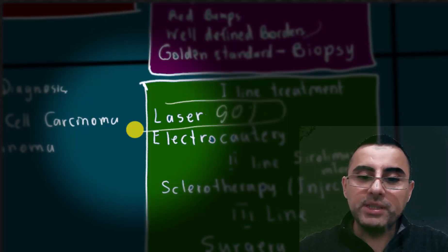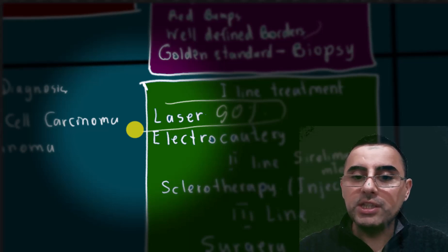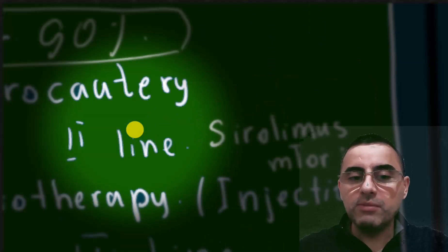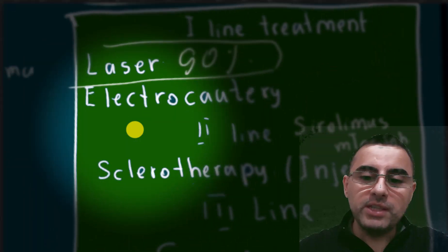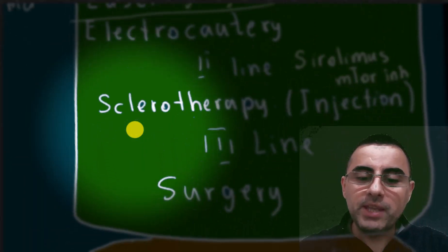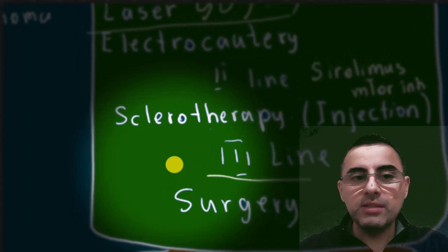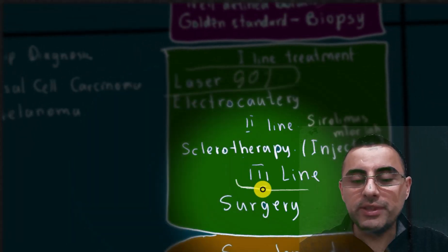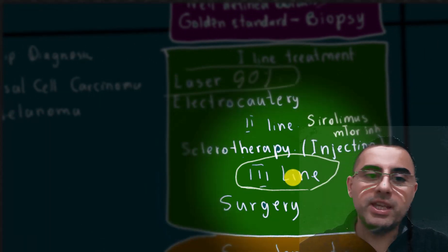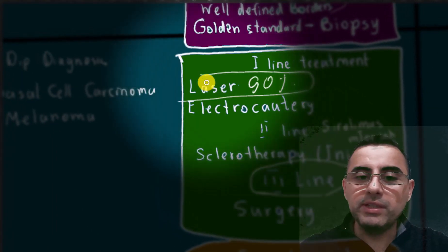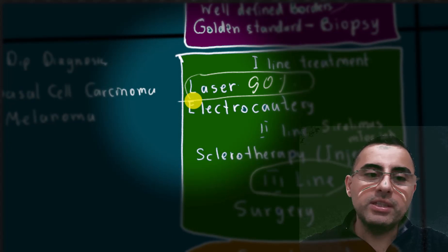The second-line treatment is sclerotherapy, which involves injections. Also, mTOR inhibitors, for example sirolimus, are effective second-line treatment. Third-line treatment is surgery. Surgery is reserved for special cases. Most commonly, laser therapy is enough.